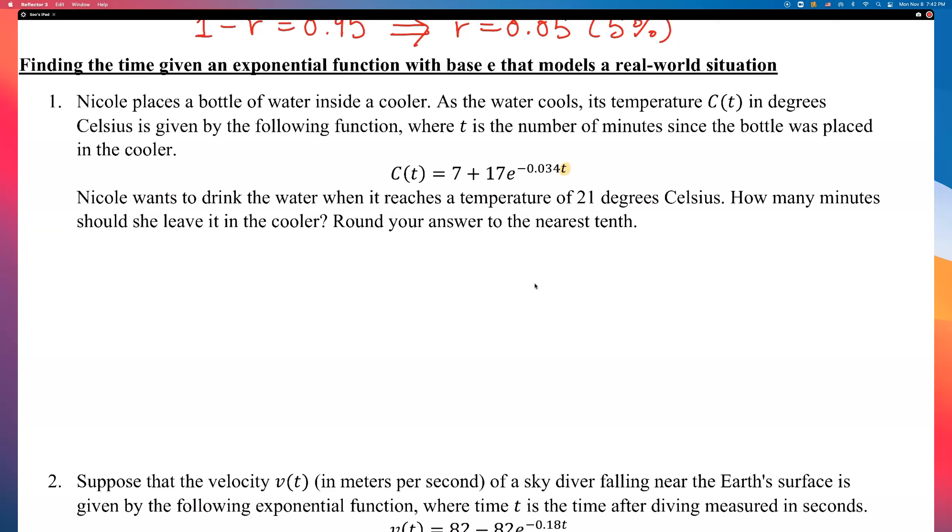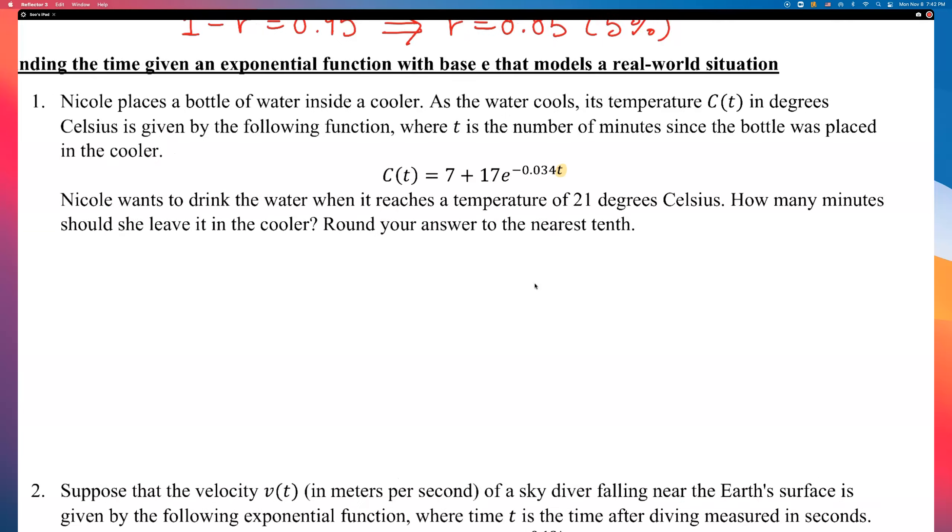Nicole wants to drink the water when it reaches a temperature of 21 degrees Celsius. So, she wants that side to be 21. She wants it to be cool enough for her to drink. So, she wants that temperature to be 21. So, what I'm going to do is I'm going to set it up and say 21 equals 7 plus 17 times E raised to the negative 0.034t.